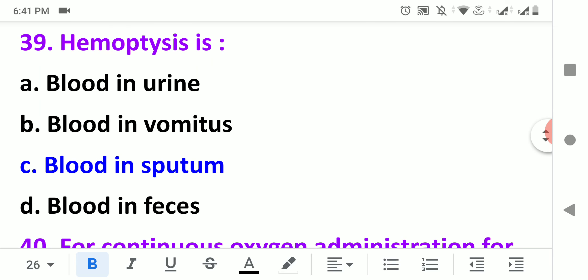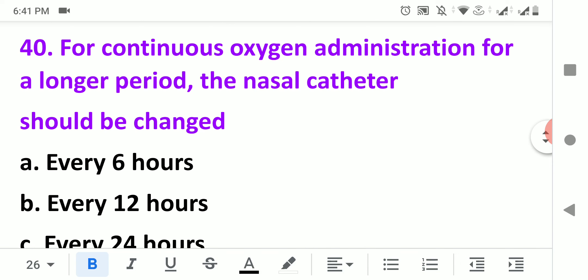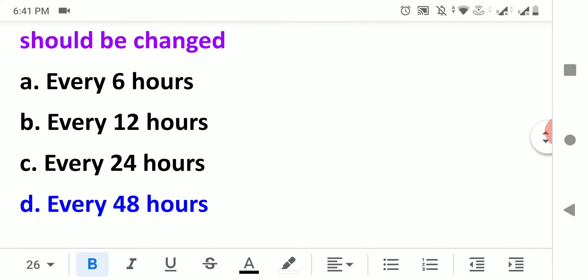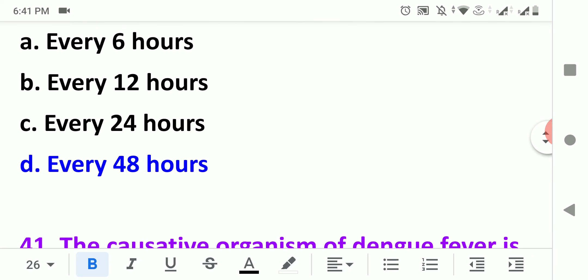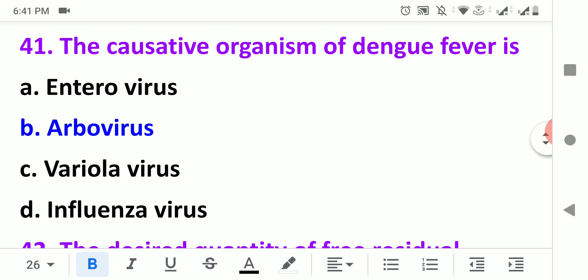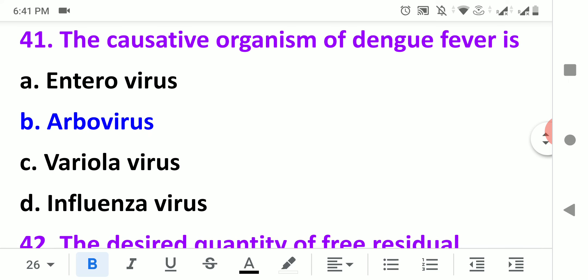What is hemoptysis? Hemoptysis is blood in sputum. For continuous oxygen administration for a longer period, the nasal catheter should be changed. It's not written anywhere specific, but you can change it after a week, that is 7 days.